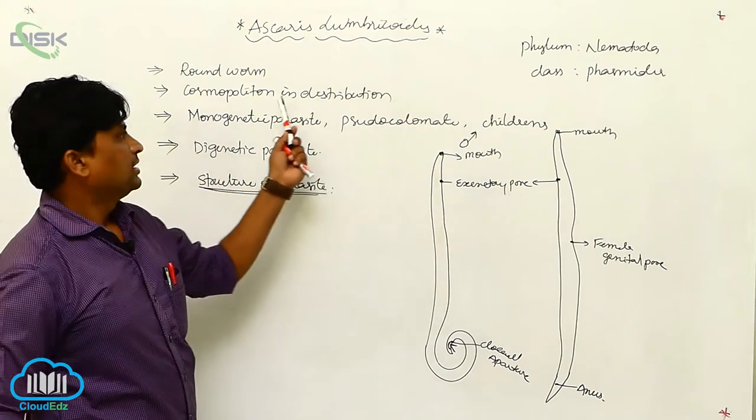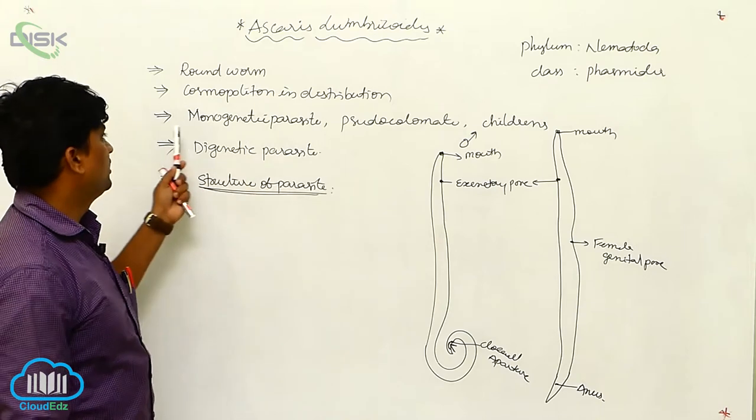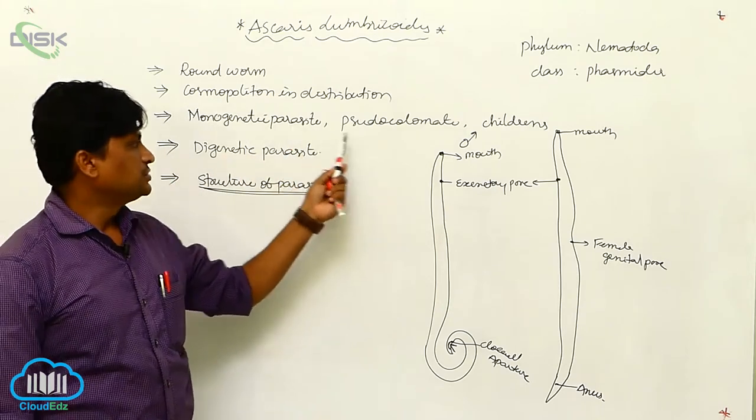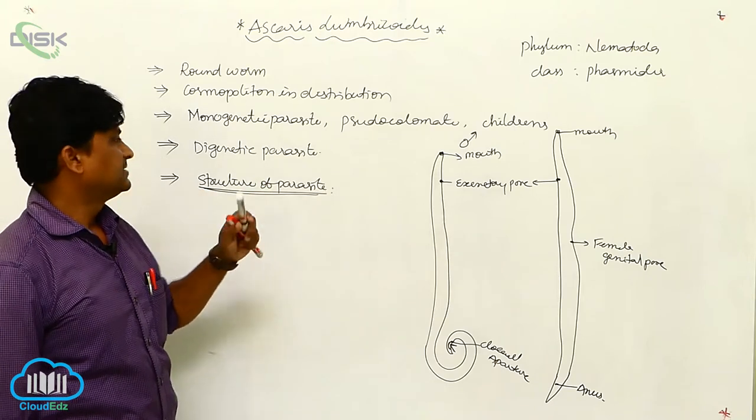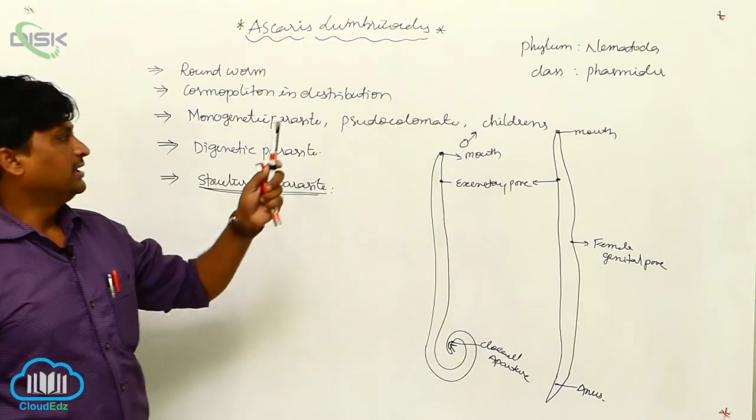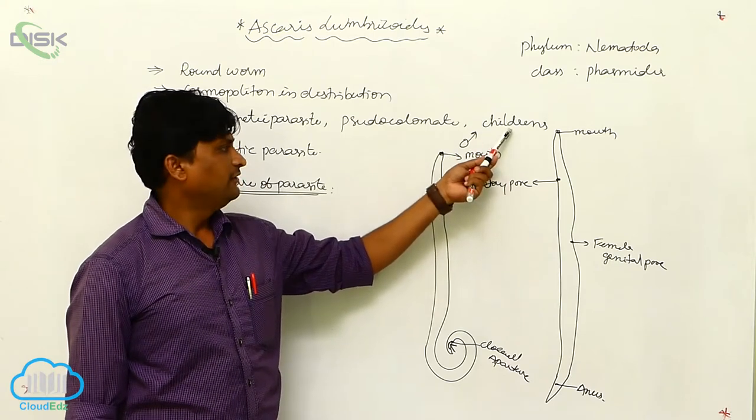Ascaris Lumbricoides, commonly called as Roundworm, is a cosmopolitan distribution and monogenic parasite, Pseudosilomate and Digenetic parasite. It mostly infects human beings and is frequently found in children.